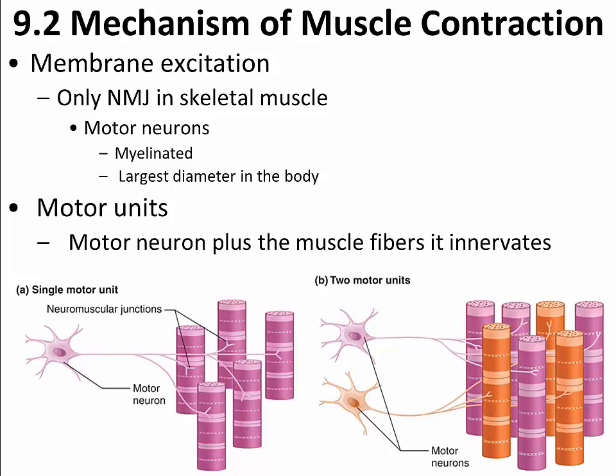We look at the motor unit in figure 9.7 on page 263 of your text. A motor unit is the term used to describe the motor neuron plus all the muscle fibers that particular motor neuron connects to or innervates. Looking at part A of figure 9.7, we see a single motor unit consisting of a single motor neuron and several muscle fibers. The size of motor units varies dramatically in different parts of the body.